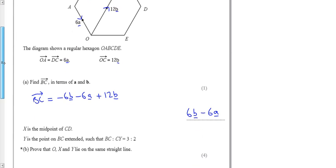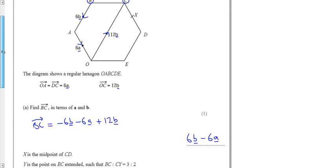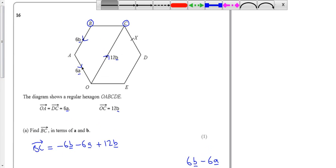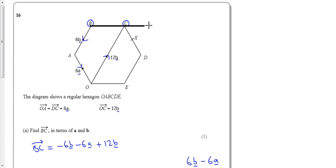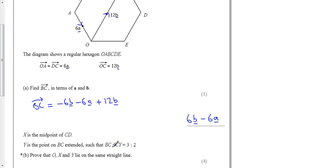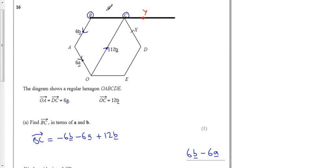It tells me Y is the point on BC extended, such that CY equals 3, 2. So Y is on the point BC extended, so let's make BC a little bit longer. And somewhere on there is the point Y, and it tells us that BC is 3 and CY is 2. So BC is 3, CY is 2.